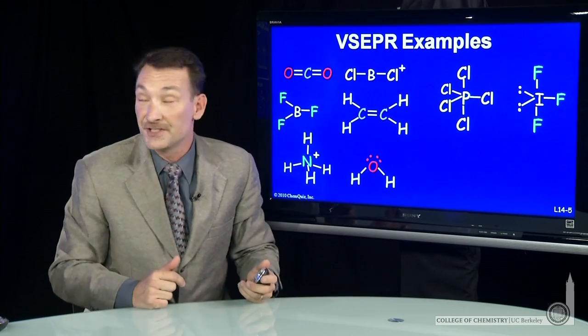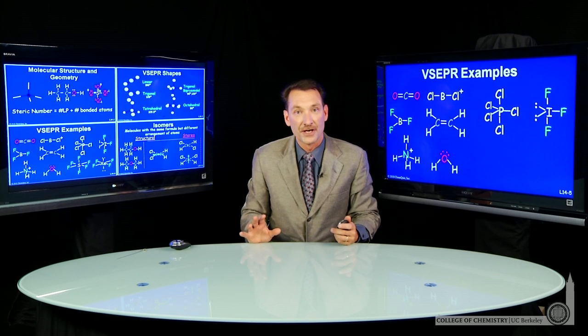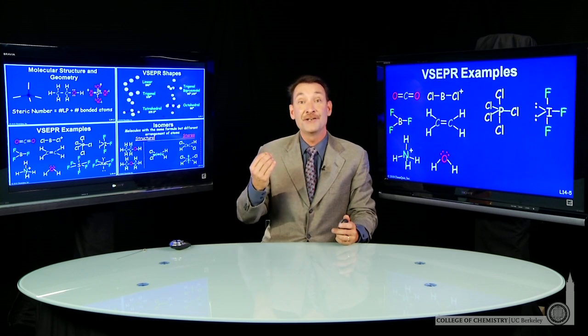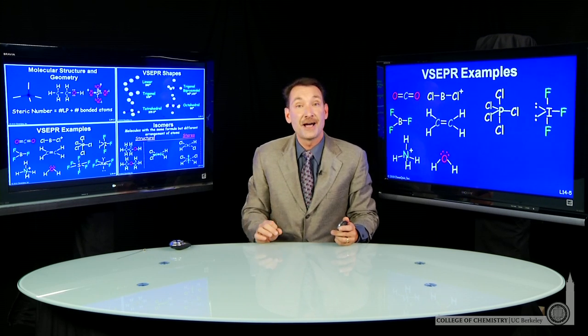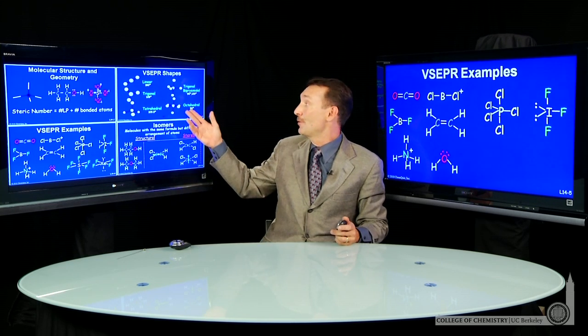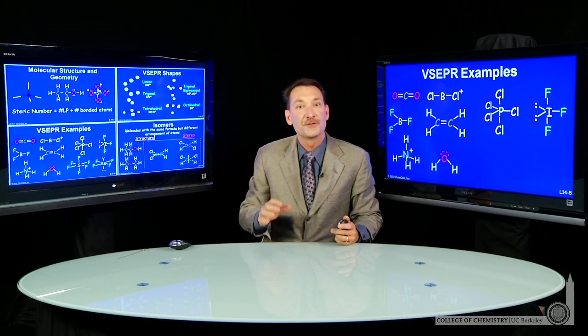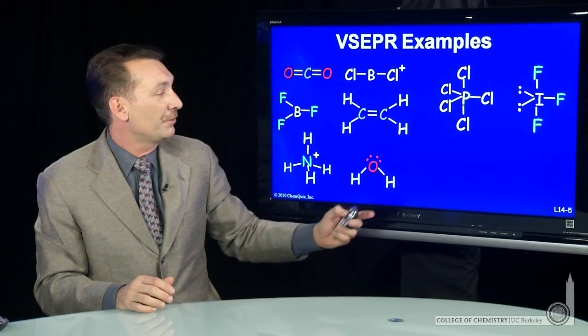We can go to steric number six. Steric number six will have an octahedral configuration. And remember, it's octahedral because this shape is an octahedron, which has eight sides but six vertices. So six vertices, each position identical, 90 degree bond angles between all of them.